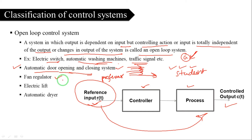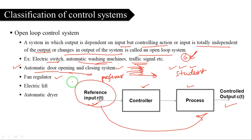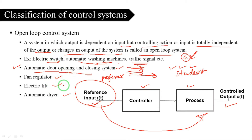Next example is a fan regulator — you can change the fan speed using the regulator button. This is an open-loop control system. Other applications and examples of open-loop control systems include a lift and automated dryers.